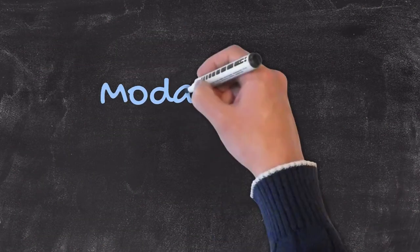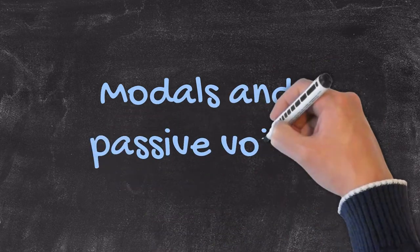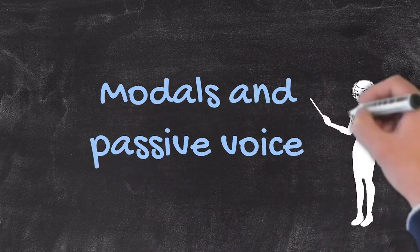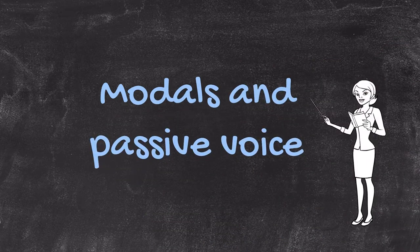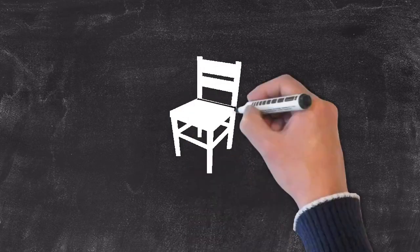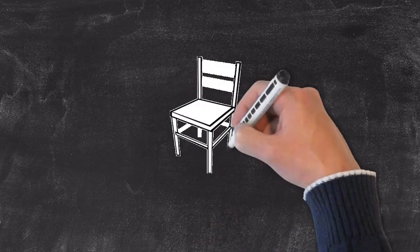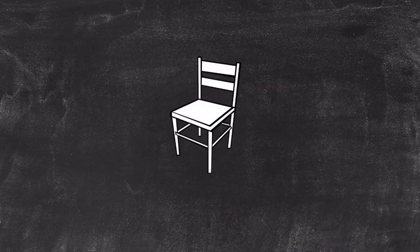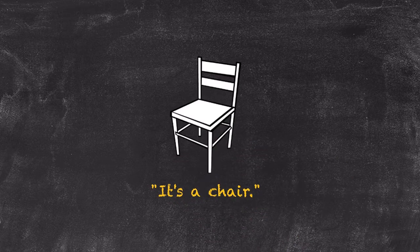In this unit we're going to be looking at modal auxiliary verbs. What are modal auxiliary verbs? Well, suppose you draw something such as this. It's quite clearly a chair and we can make a simple sentence to convey that point: it's a chair.